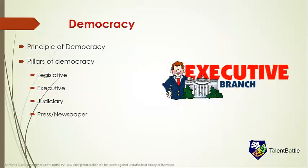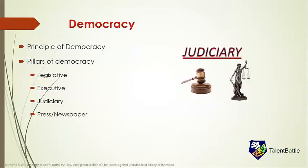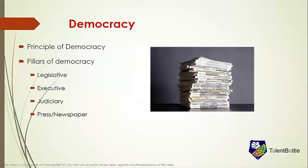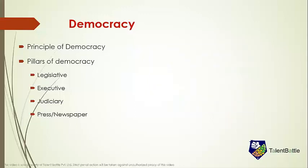The executive pillar is responsible for implementing the laws formed by the legislative section and issues orders for their proper implementation. The judiciary keeps a check on the laws given by the legislature and the orders issued by the executive, ensuring that these laws and orders do not curtail the fundamental rights of the citizens. The press or newspaper ensures transparency in the working of the above three pillars.